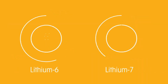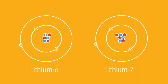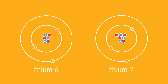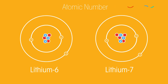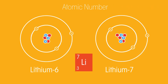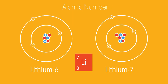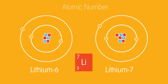Now for isotopes. All atoms of a particular element will always have the same number of protons in the nucleus. This is called the atomic or proton number. Lithium has three protons, so the proton number is three. But neutrons are a little different — the number of neutrons in an atom can change.